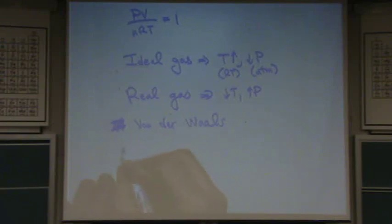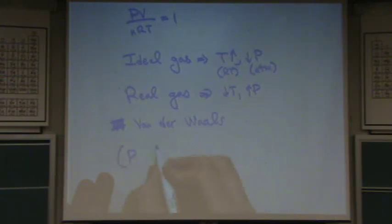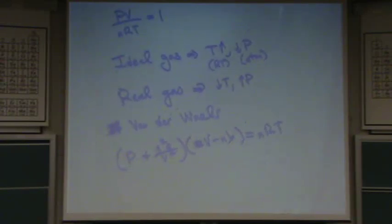Okay, I'll just write yours because you're so kind. But it's the same as mine. So here, you have P plus n squared a over V squared times V minus nb equals nRT. So in this case, keep a couple things in mind. A and b, the lower case a and b, those are constants. Those must be given to you.